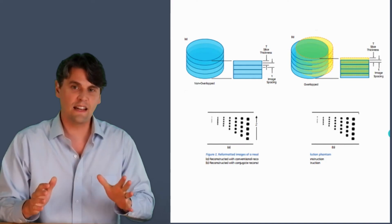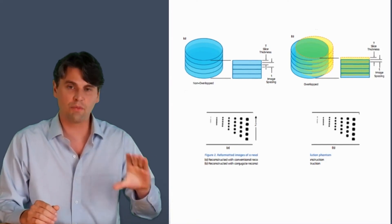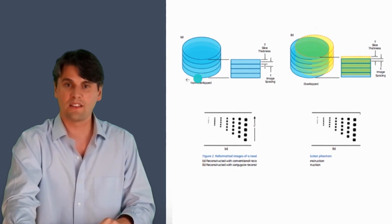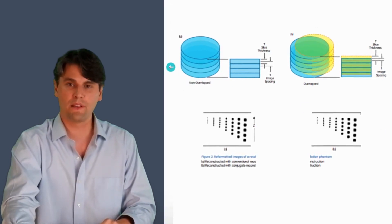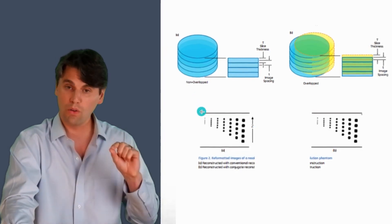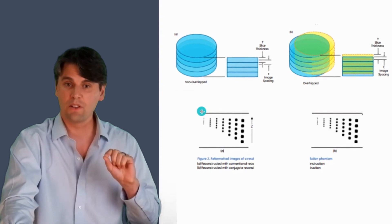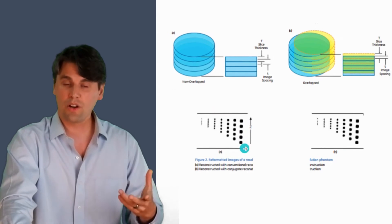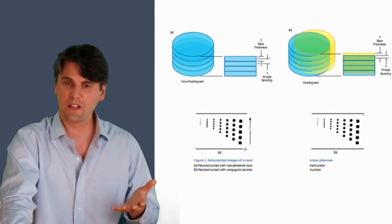The idea is that, with traditional reconstruction, you're just reconstructing single slices and there's no overlap between those slices. And then if you take a phantom which has holes drilled out of it and you image it, you'll get an image that looks something like this.